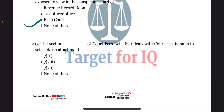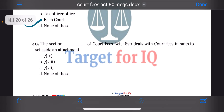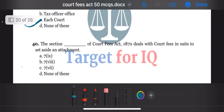Next question: the section dash of this act deals with court fees in suits to set aside an adjudication. The options are A. 7 clause 9, B. 7 clause 8, C. 7 clause 7, or D. None of these. The correct answer is option B. 7 clause 8.